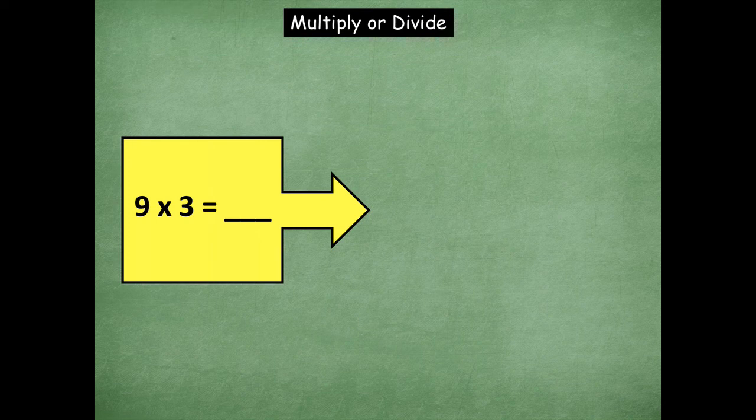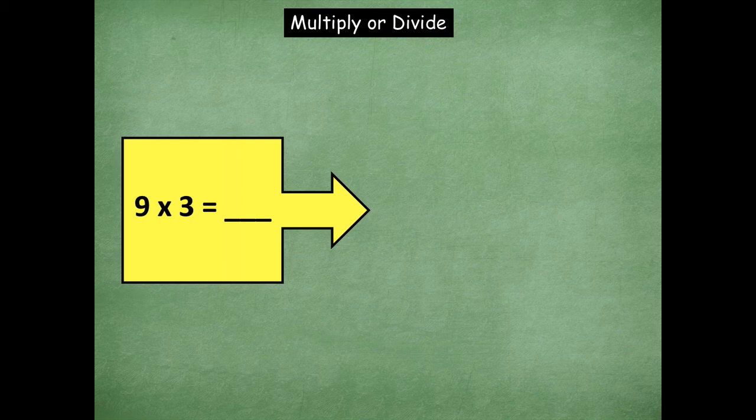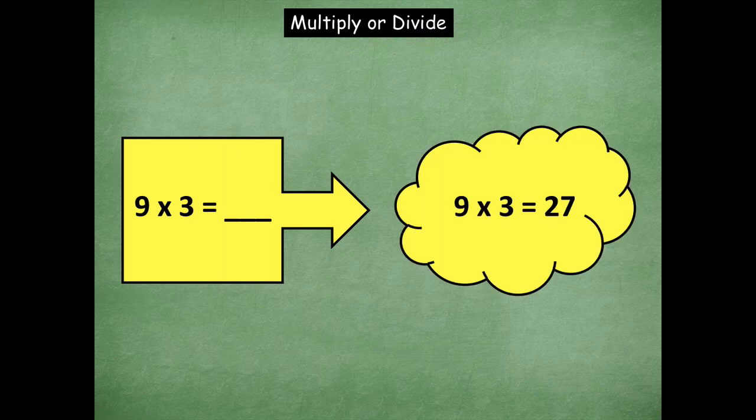Awesome job, friends. Okay. 9 times 3. 9 times 3 equals 27.